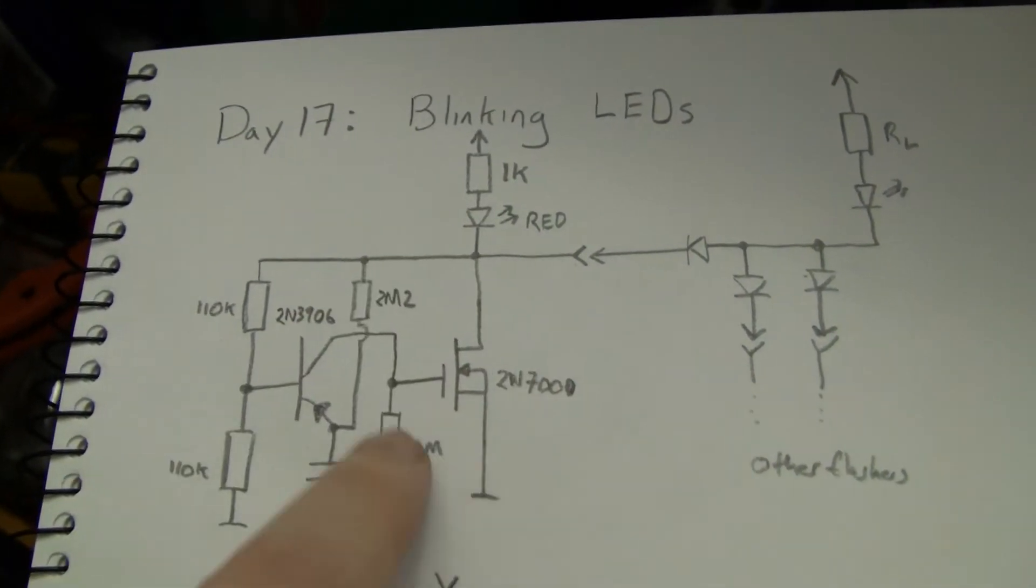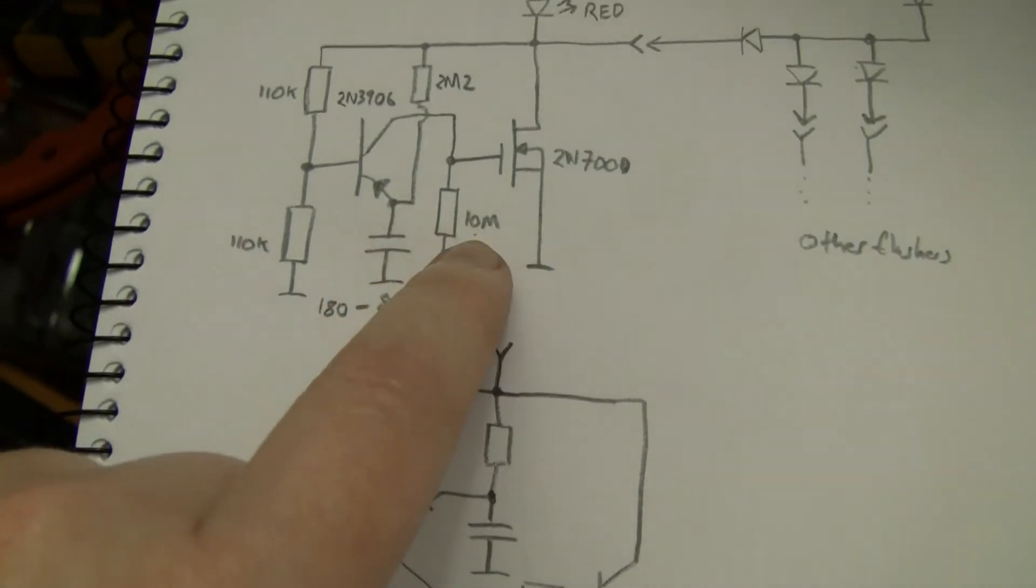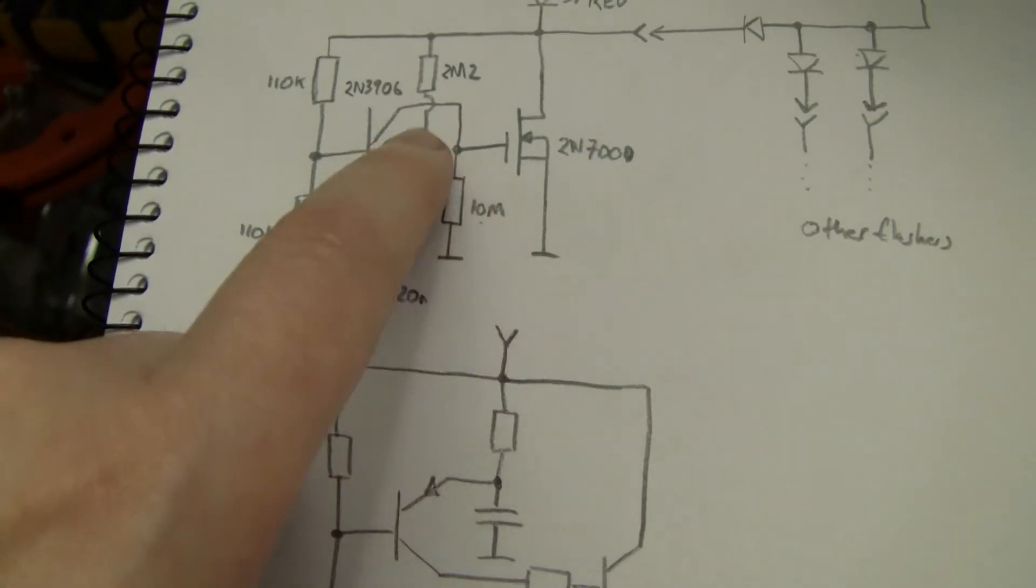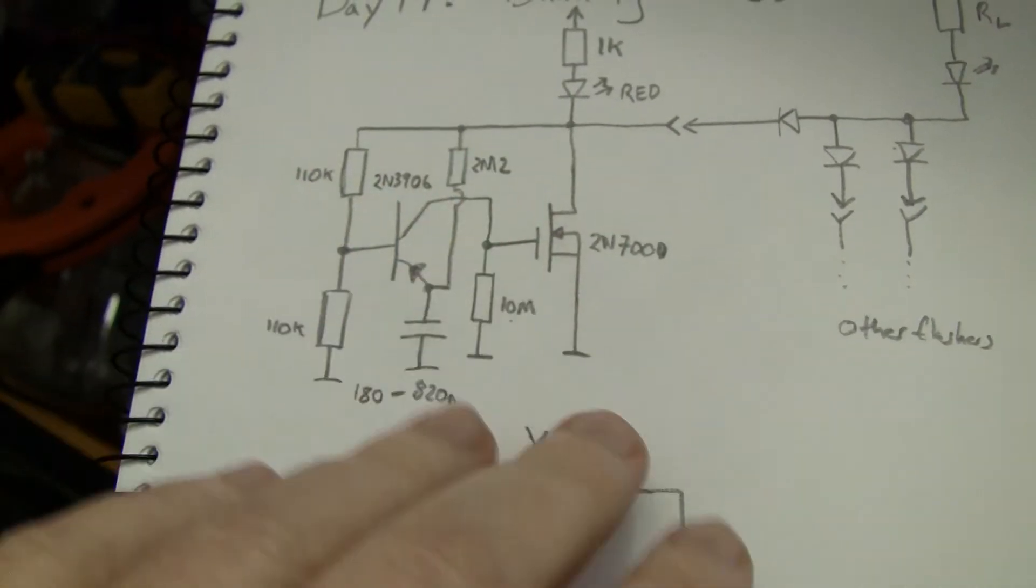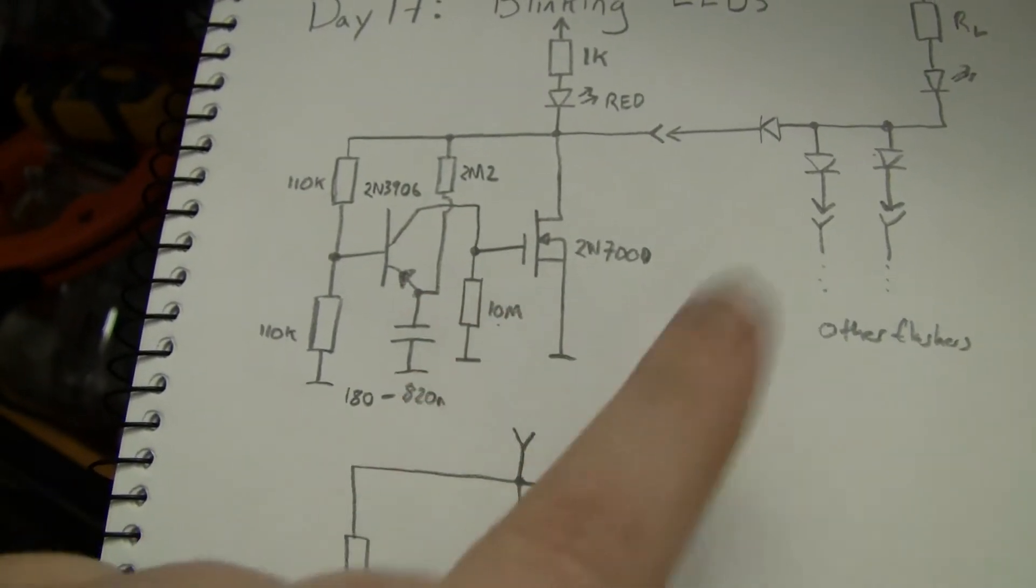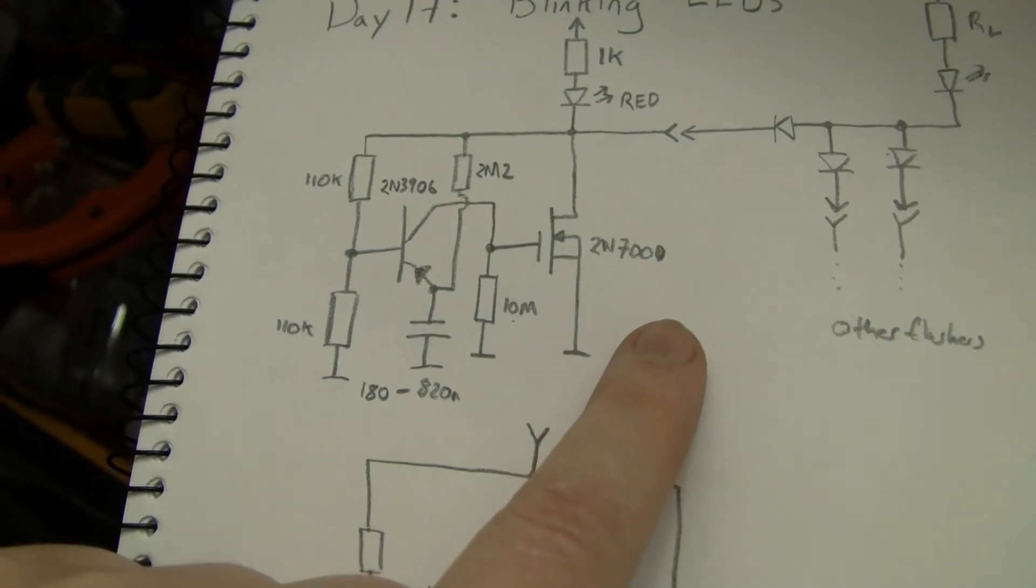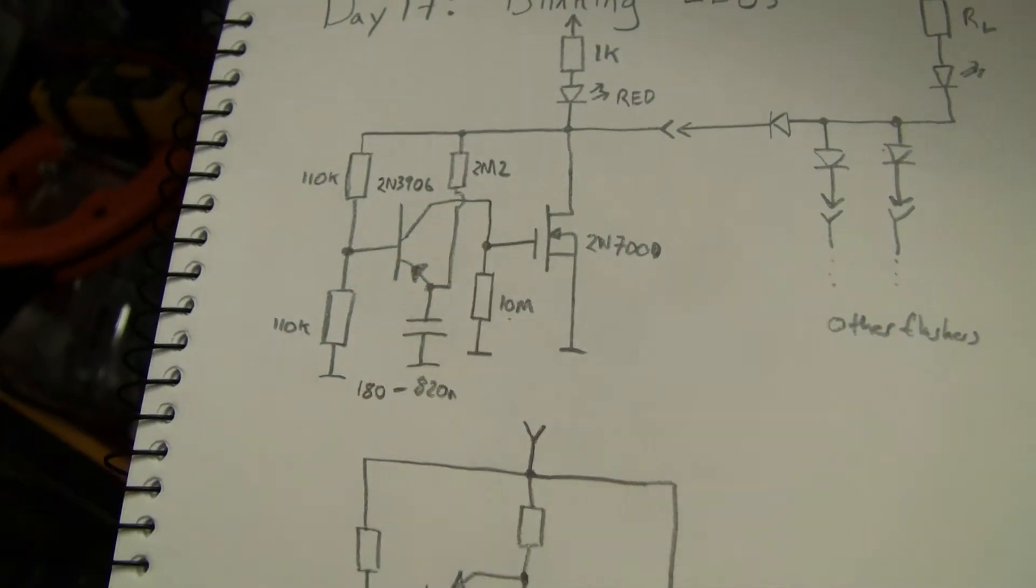If you do build them with a BJT you'll find that this 10meg resistor here is quite large. In fact if you touch this with your finger or touch most parts of the circuit, because it's such a high impedance circuit, you'll upset it.